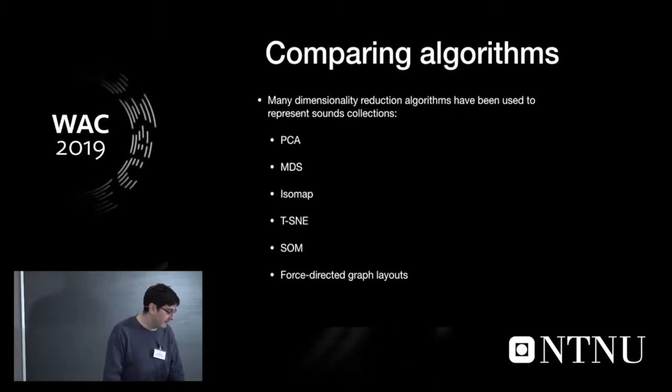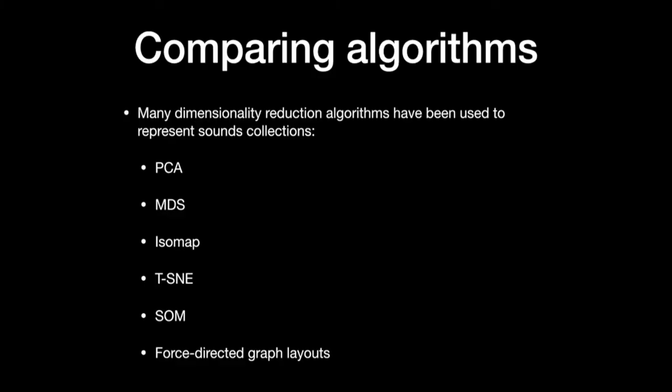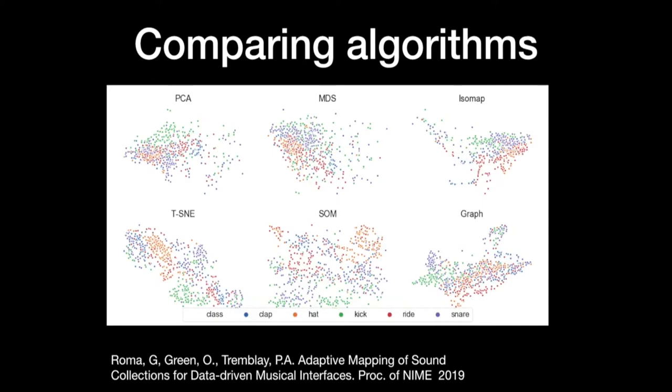So this is a bit of a diversion. But we did this work we presented this summer at the NIME conference, where we wanted to compare some of these algorithms for music creation applications. And it's quite hard to compare because they all, I mean, it's very subjective. For example, if we put a collection of drum sounds, the drums, they all have natural clusters, the bass drums or something, and the snare drums. So you can see if these clusters appear in these visualizations.